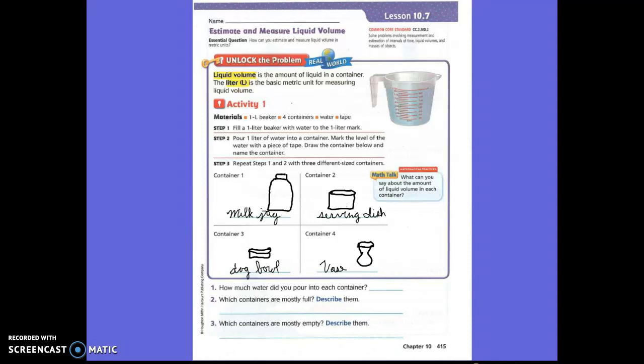Okay. So, we did the milk jug, and the milk jug only filled up about this much of the milk jug. One liter only filled up this much of the milk jug. The serving dish is probably a little over half of water. It filled up that much. The dog bowl could not even hold a whole liter. It filled all the way to the top. And the vase filled up almost to the neck with water.